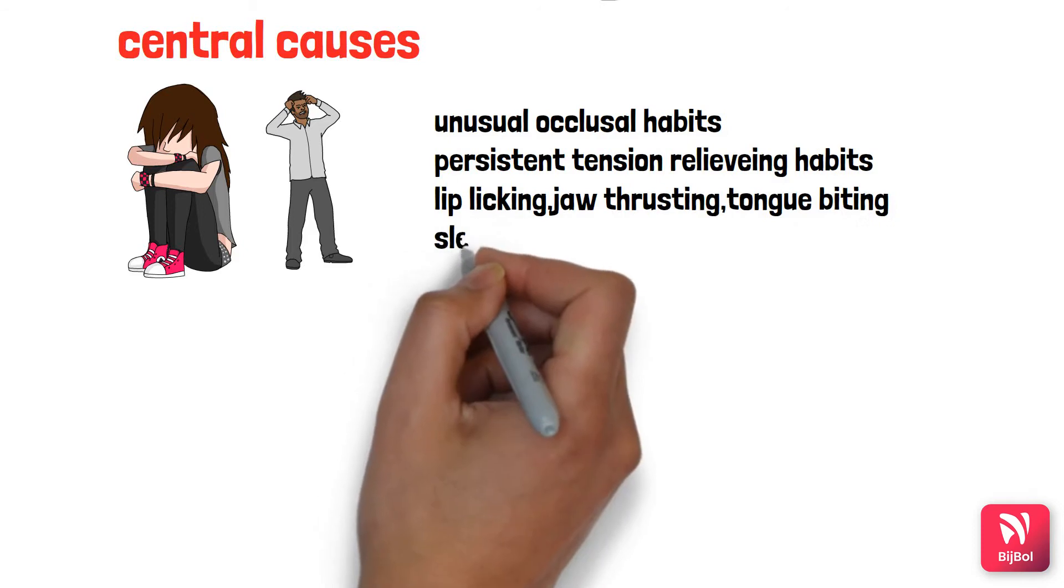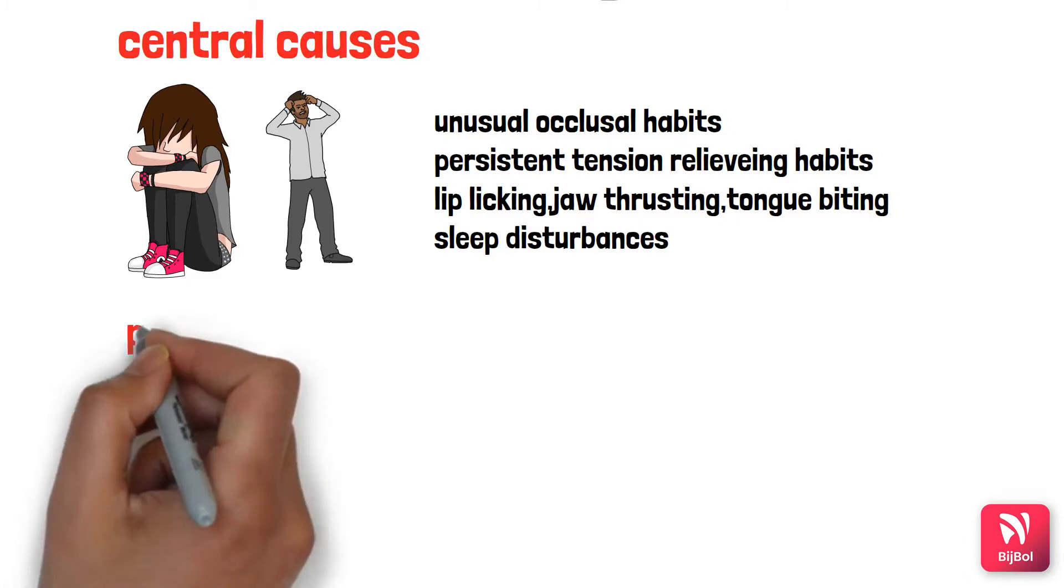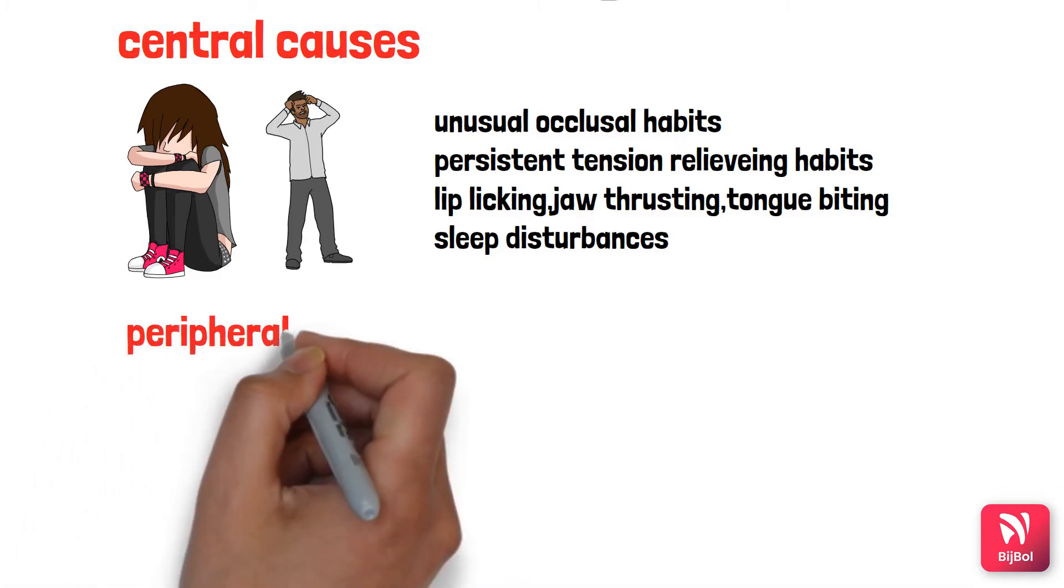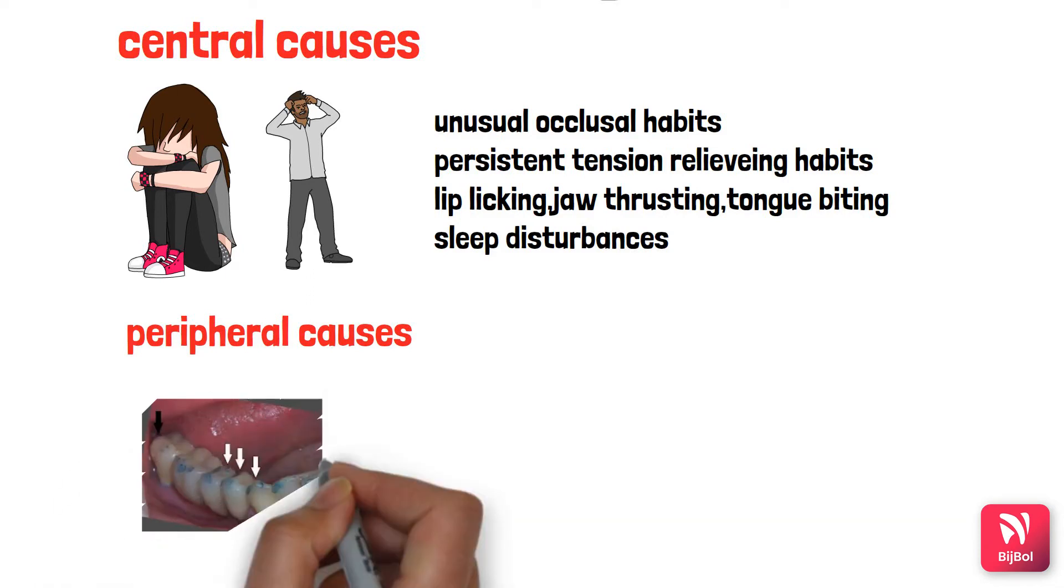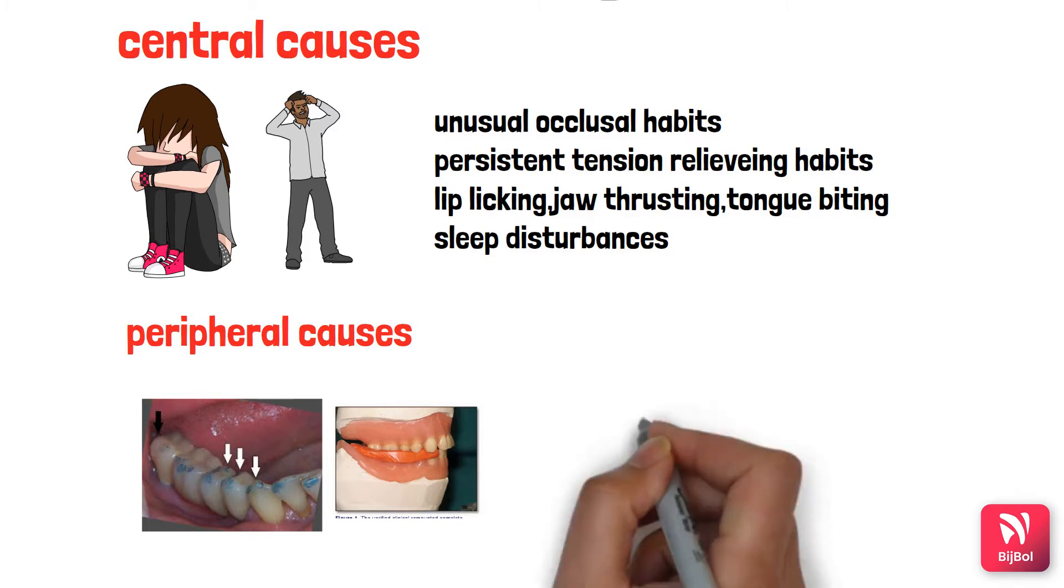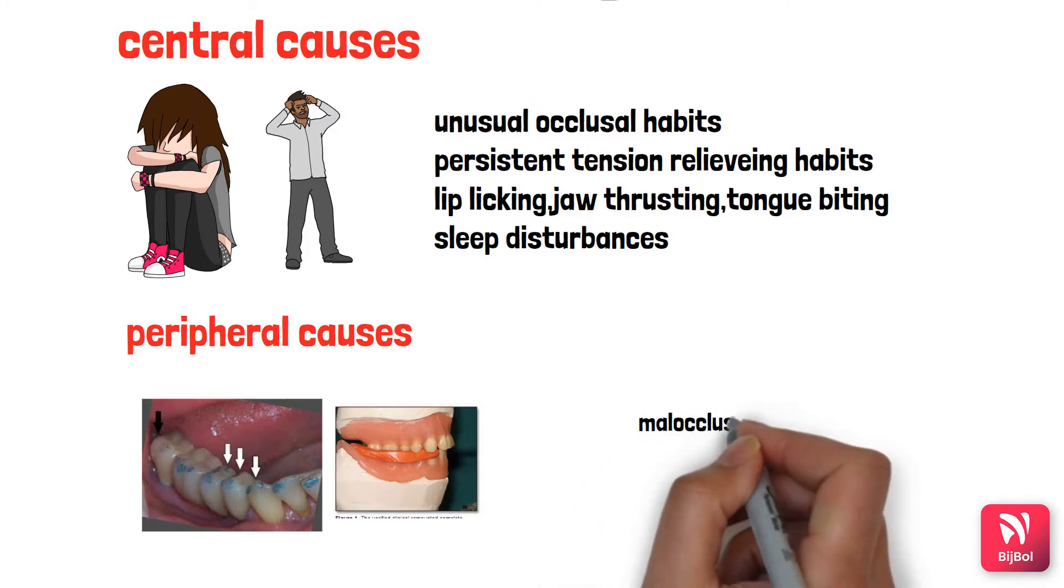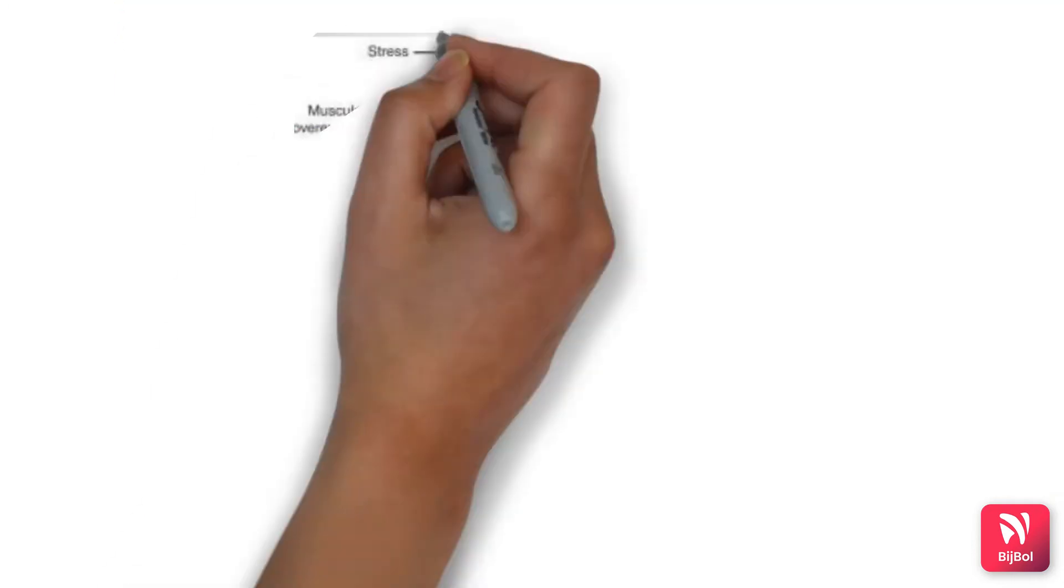the masticatory muscles and the temporomandibular joint. Coming to peripheral causes: these usually include occlusion, the presence of high points or premature contacts, or malocclusion, especially Class 2 Div 1 or Div 2, wherein there's a constant deep bite and constant pressure on the masticatory muscles and joint, causing disturbances in chewing patterns.